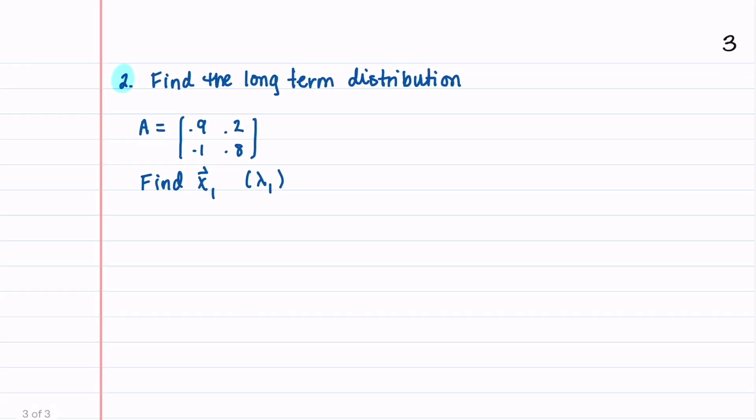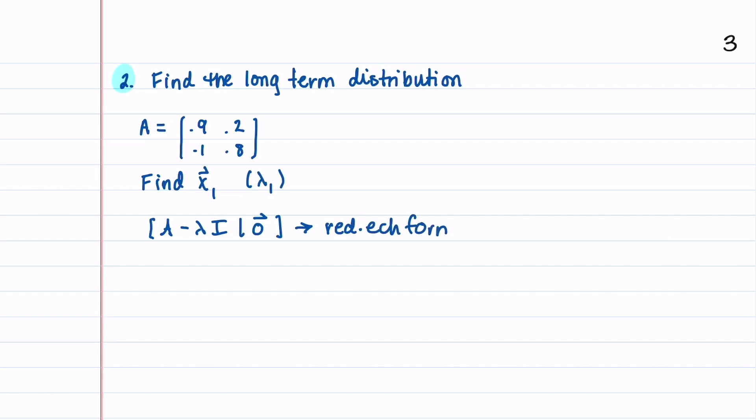To find x_1, we're going to take A - λI, augment it with 0, and put it in reduced echelon form, and solve for x_1. Let's note that λ_1 = 1, so that's what we're going to subtract off the main diagonal. So we have 0.9 - 1 = -0.1, 0.2, 0.8 - 1, and that's augmented with 0.